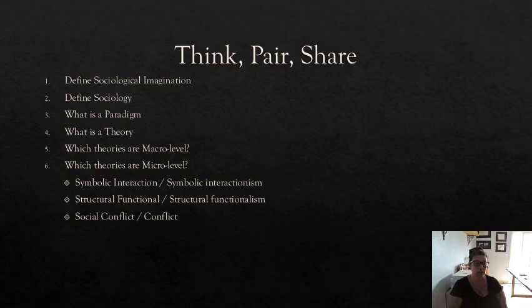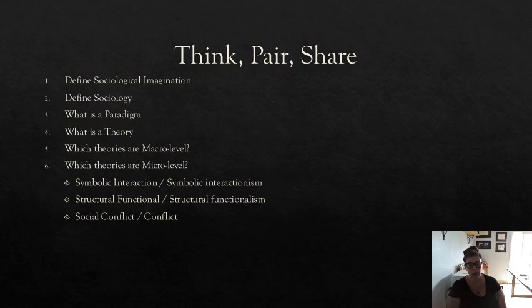Let's get started. Today's share is: define sociological imagination — we spent all of last week doing that, so can you do that again? Define sociology. What's a paradigm? A theory? What's macro level? What's micro level? And which of these theories — symbolic interaction, structural functionalism, and social conflict — are micro and which ones are macro?